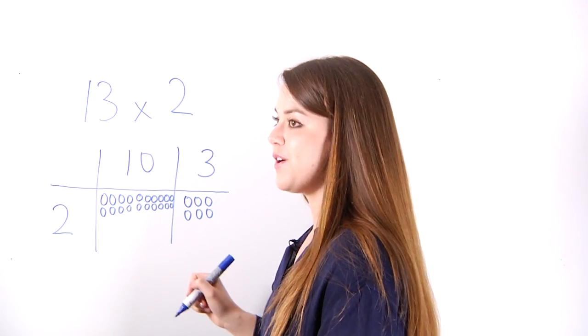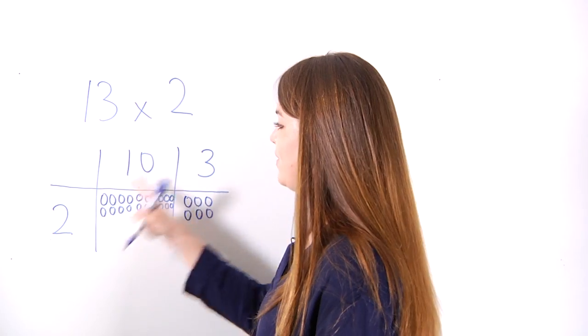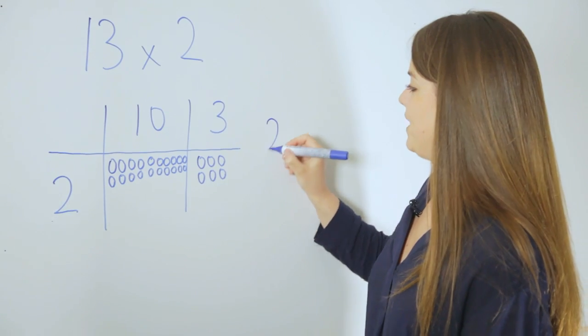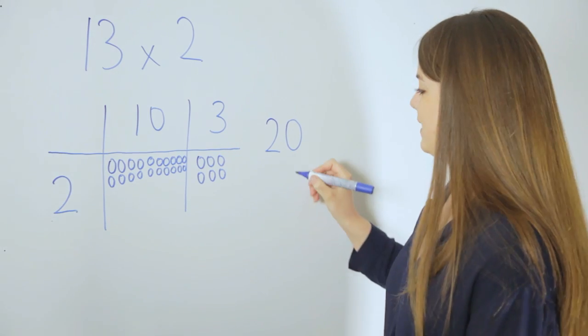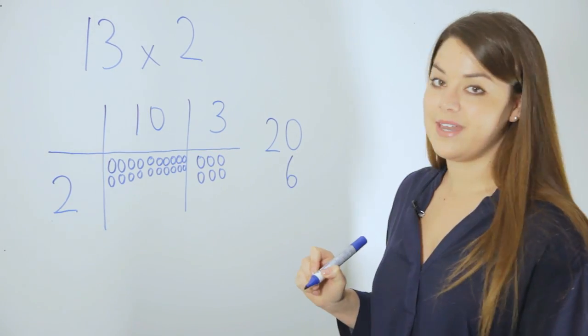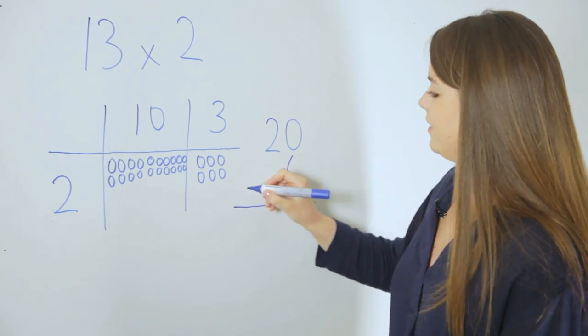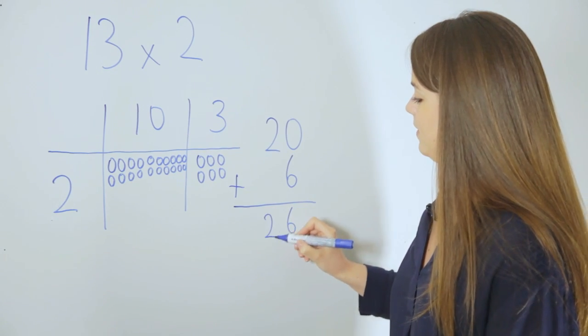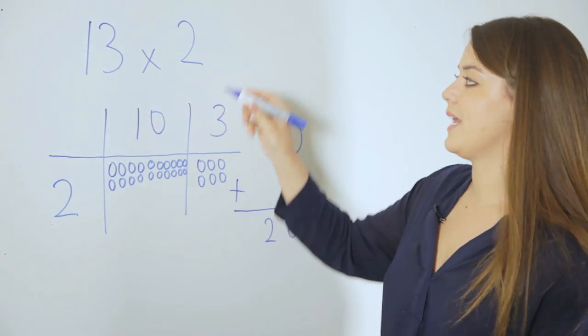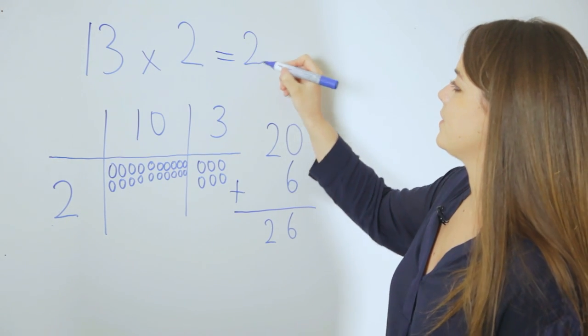Once we've finished drawing our arrays, we then count up our 2 lots of 10 which gives us 20 and our 2 lots of 3 which gives us 6. We then add these two numbers together and the answer to 13 times 2 equals 26.